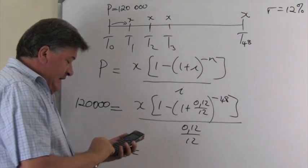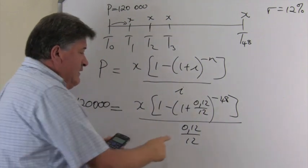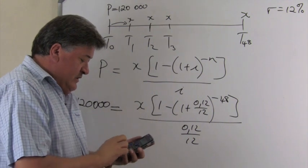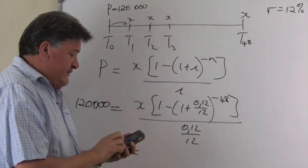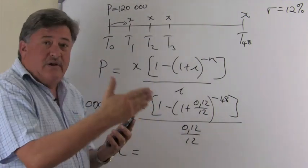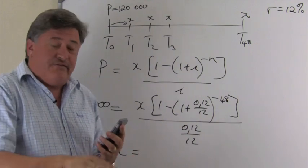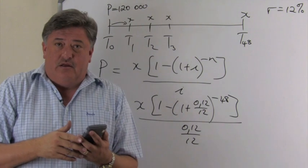So, my 120,000 times by this fraction, 0.12 over the 12. Then, my denominator, because it's this times by that. My denominator means it's below the line, so I divide by.